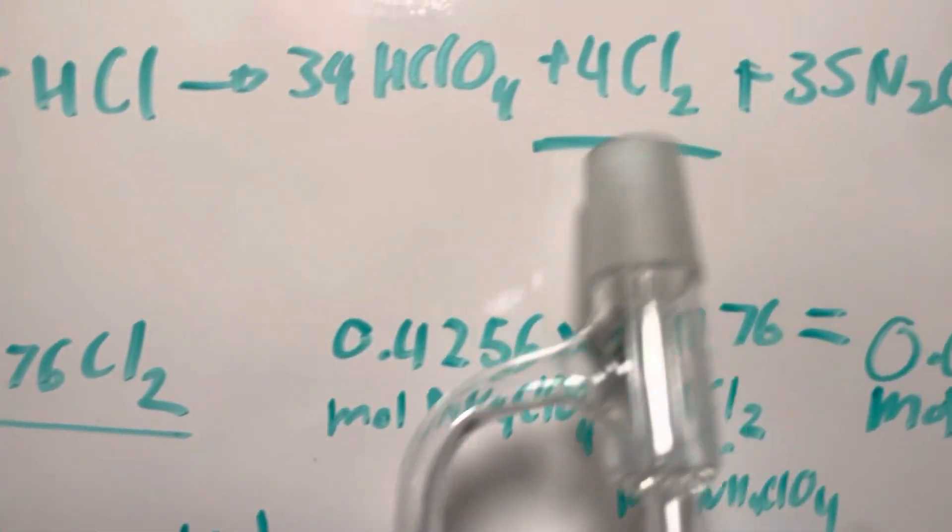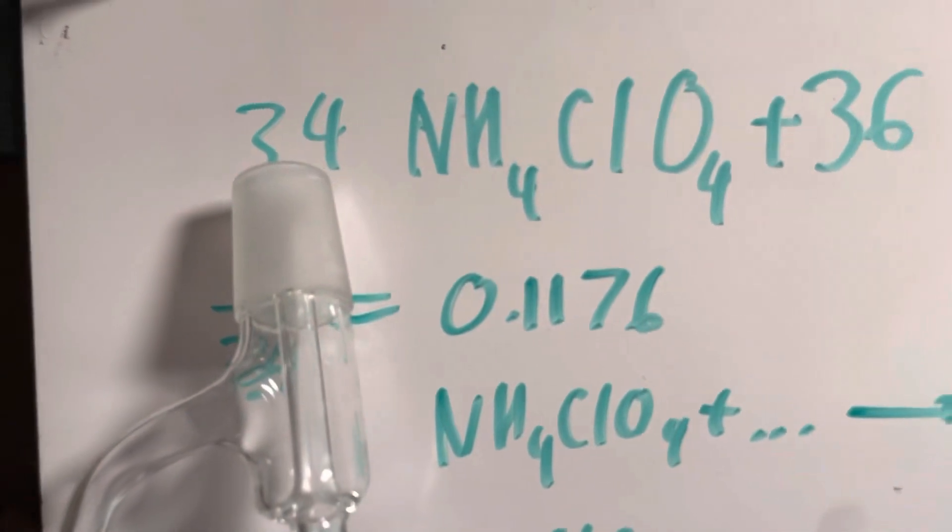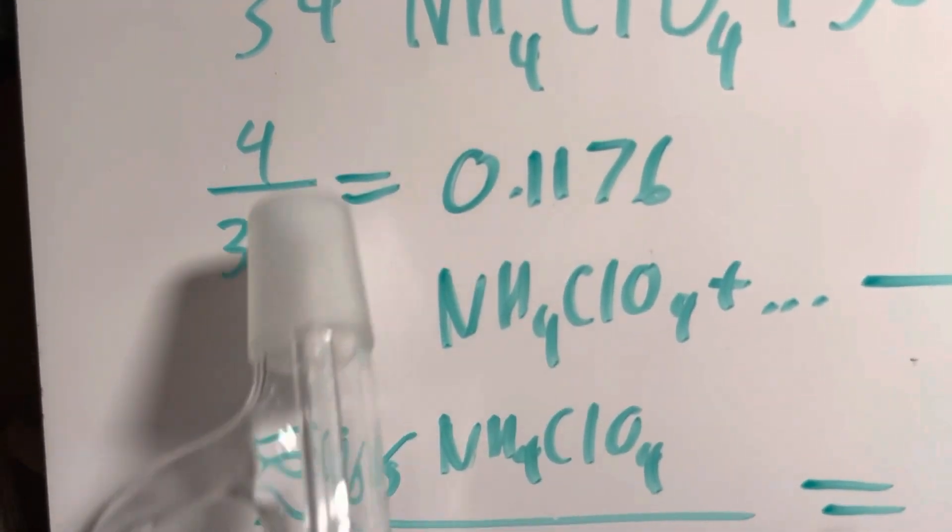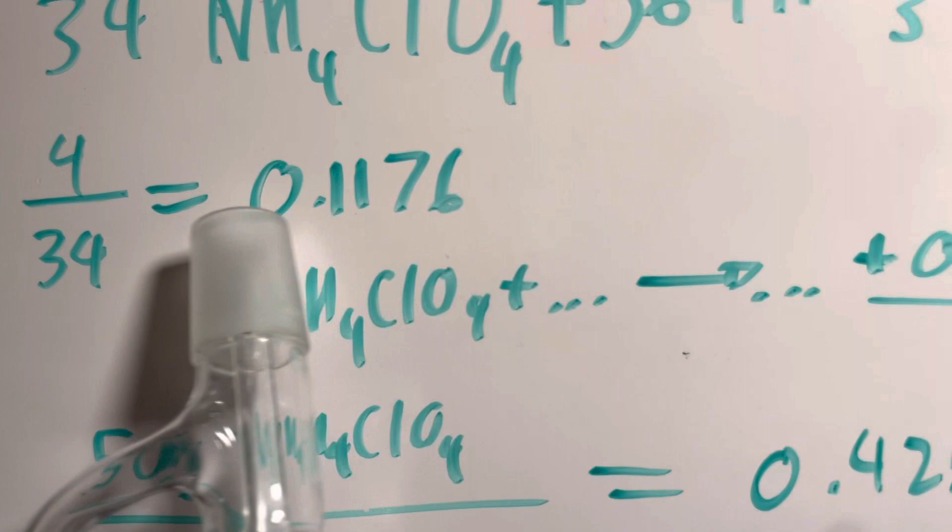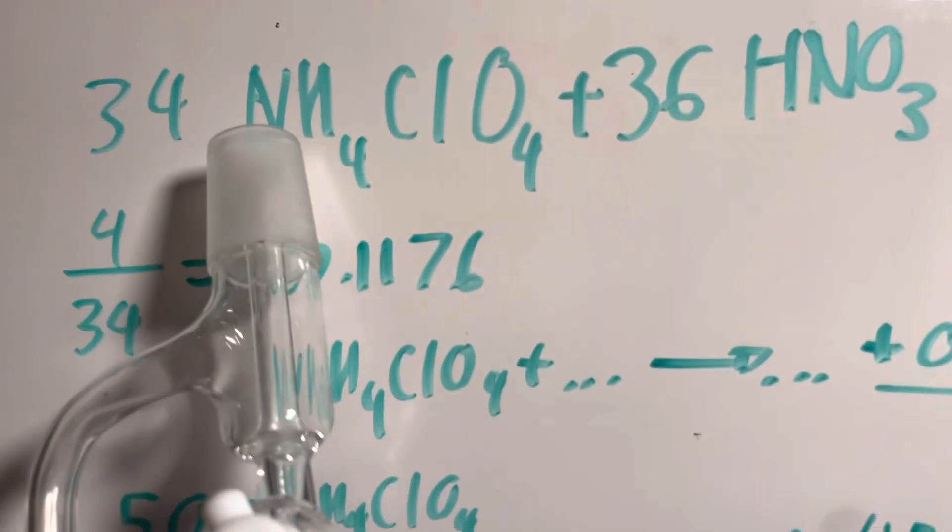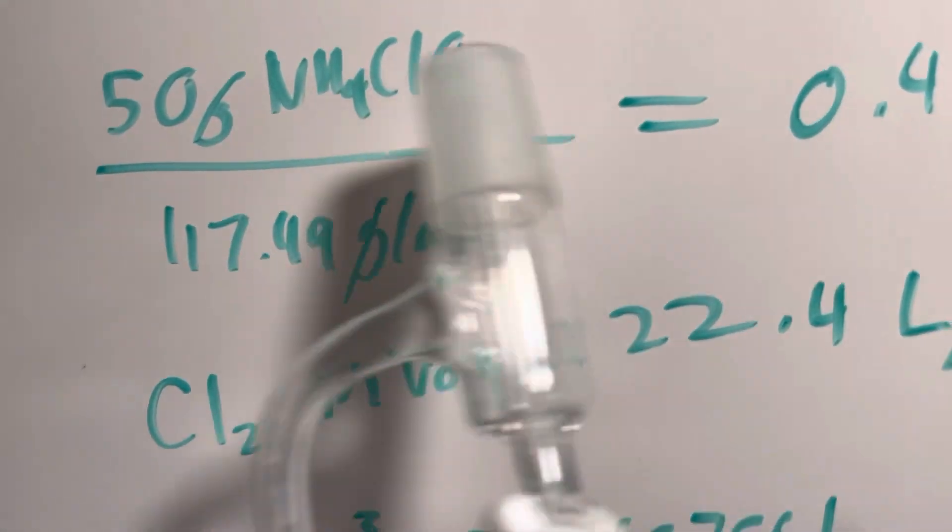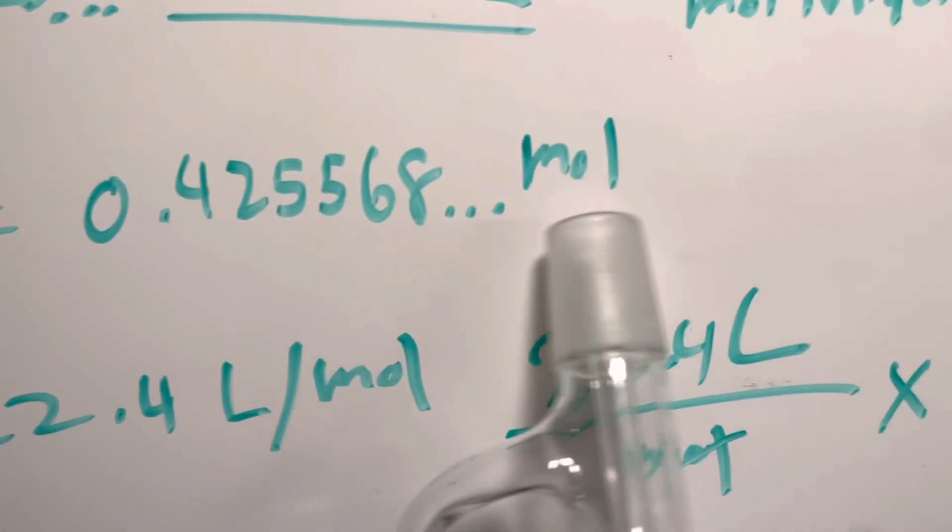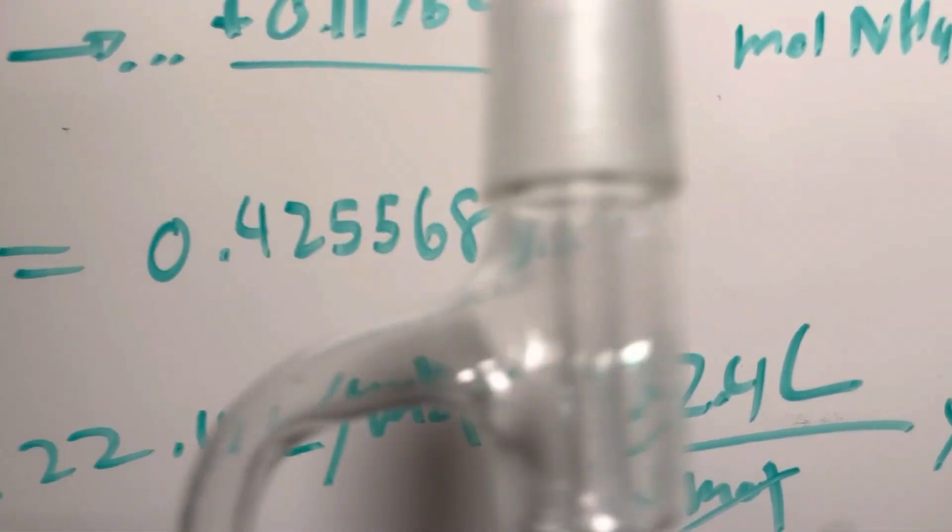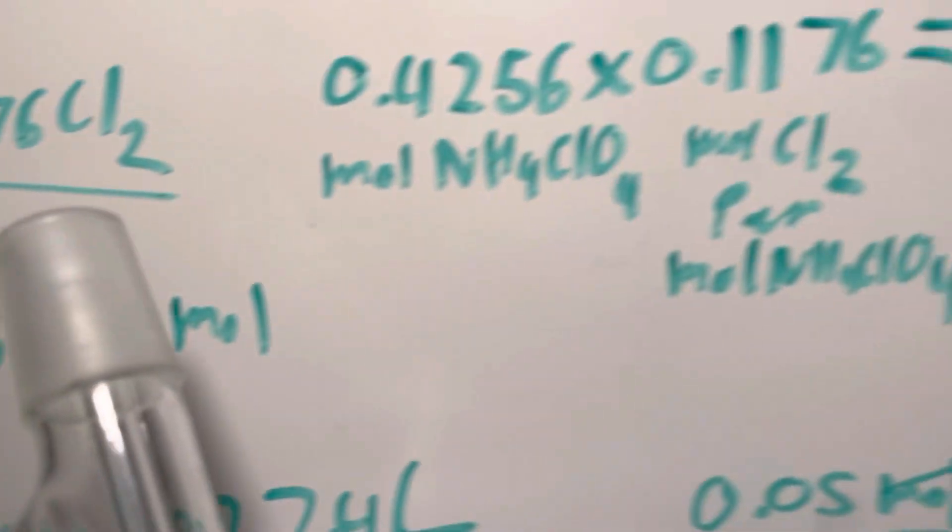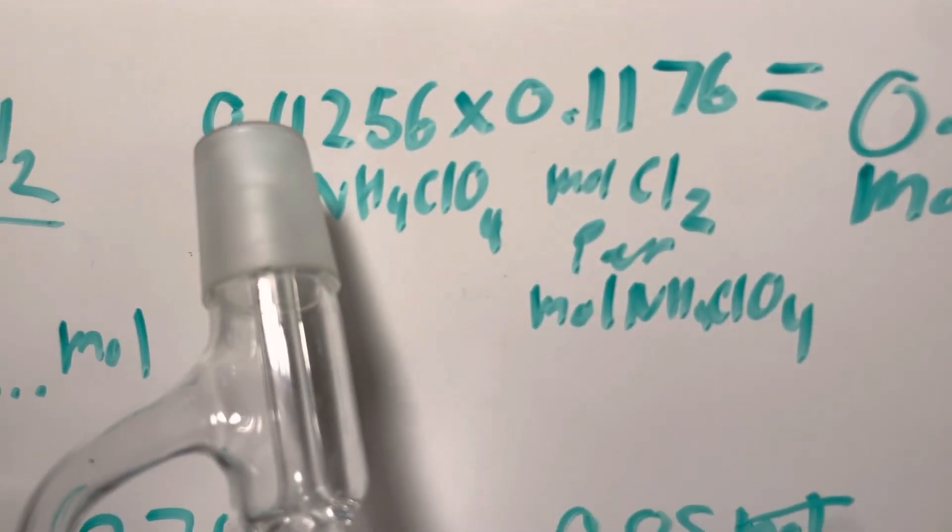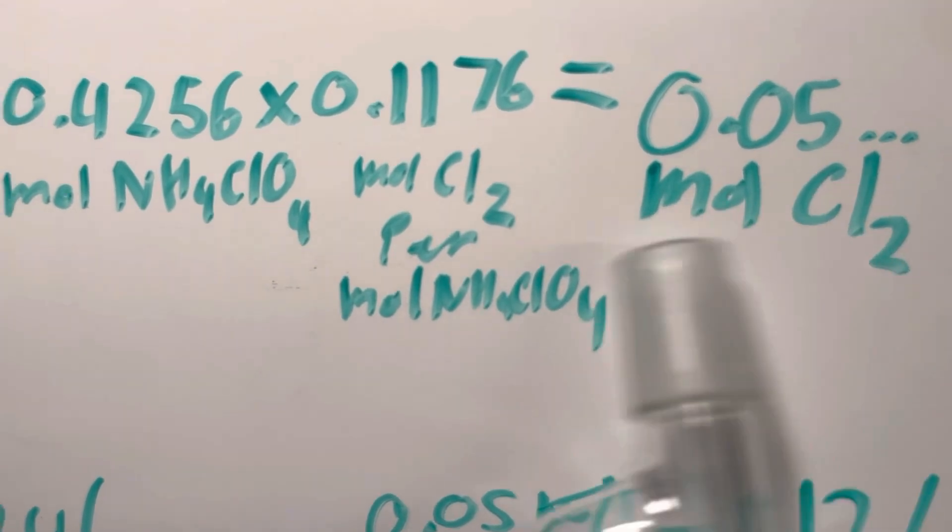So now, first things first, we figure out how much chlorine we get per mole of ammonium perchlorate. This can be done by dividing the amount of chlorine by the moles of perchlorate used in the reaction. So now we take our moles of chlorine per mole of ammonium perchlorate, multiply it by the moles of ammonium perchlorate in 50 grams of ammonium perchlorate, which is what we're using, and we get approximately 0.5 moles of chlorine gas.